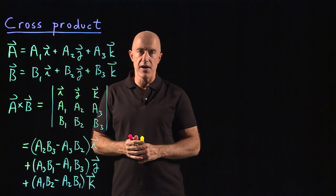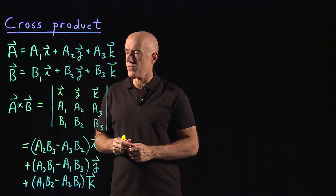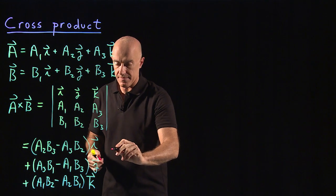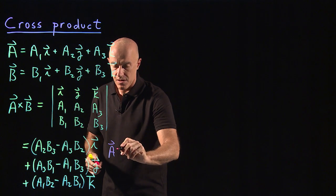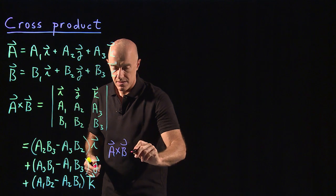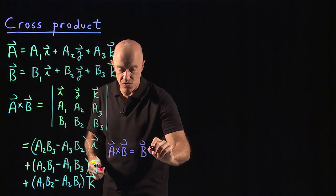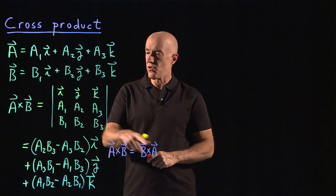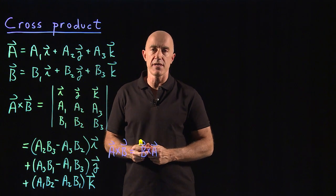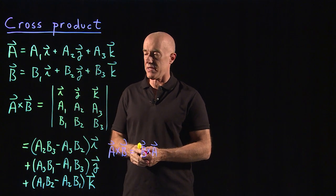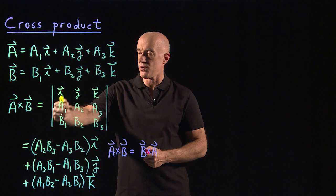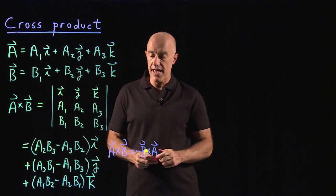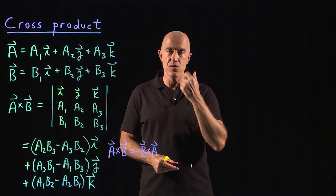The cross product satisfies certain properties, similar to the dot product. The main difference is that if we look at a cross b and commute a and b to b cross a, it changes. b cross a means we interchange the rows of this determinant. From the theory of determinants, when you interchange rows of a determinant, you change the sign. So a cross b is equal to minus b cross a.